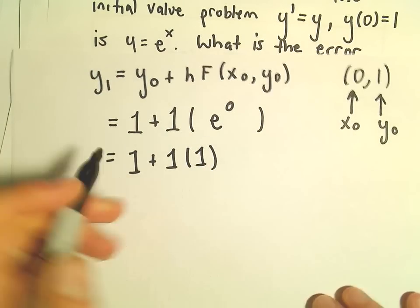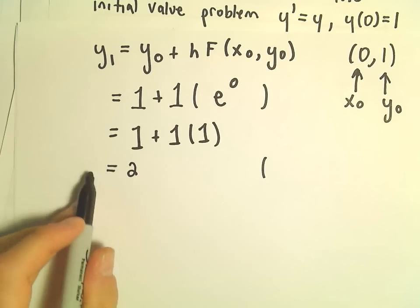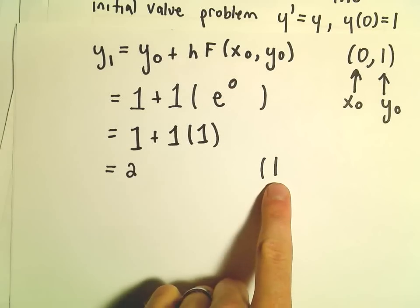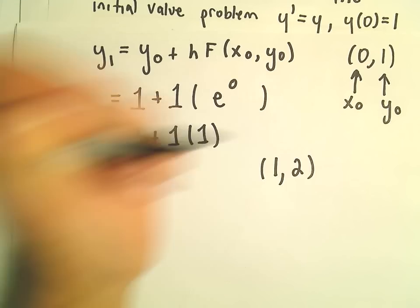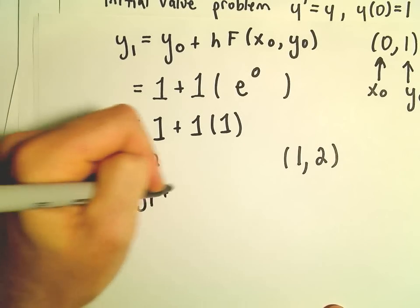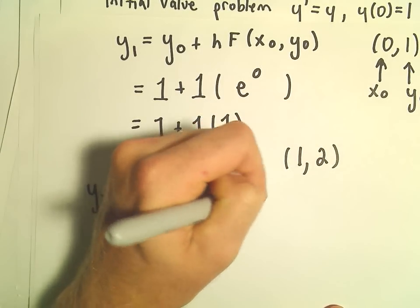This will be 1 + 1(1). Well, 1 times 1 is 1, plus 1 will give us 2. So it says we've now moved over a whole step size of 1. So the approximate y value at x = 1 is going to be y = 2. So we can do this again, and then y₂ will be y₁ plus h times f(x₁, y₁).